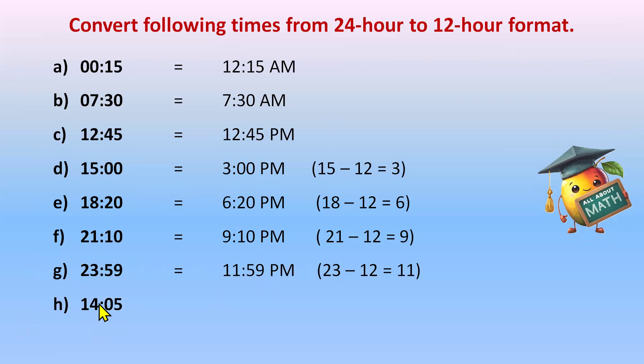14:05. 14 is again more than 12. So 14 minus 12 will give us 2:05 P.M. Minutes will be written as it is. You are just subtracting from the hour to write A.M. and P.M.